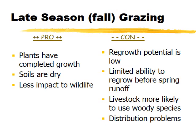Late season grazing, after the hot summer into fall, has pros: plants have completed growth and are past seed set, so they're not sensitive to grazing; soils are dry and stable with less bank damage; and there is usually less wildlife impact. The cons are that regrowth potential is very low, so any vegetation removed will not be available for spring runoff, and livestock are more likely to use woody vegetation at that time, which can be a concern if increasing woody species is a riparian goal.